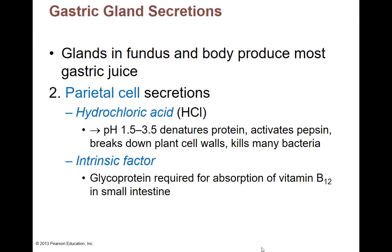The parietal cell also makes what we call the intrinsic factor. It's a protein that allows us to absorb vitamin B12 later on in the small intestine. Otherwise you could be taking vitamin B12 pills and eating foods high in vitamin B12, but you wouldn't absorb any of it — it would just pass right through. We need to absorb vitamin B12 to make red blood cells.